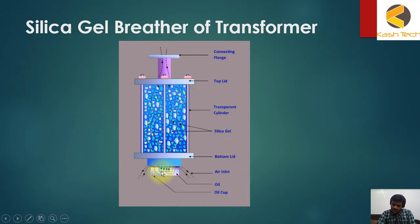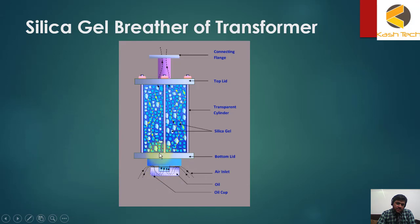You can see here there is a transparent cap, and inside it you will find oil. When air enters at the side of the breather, it passes through the oil which cleans the air from dust and other particles. From there the air goes upward and passes through the silica gel to the top of the transformer, also absorbing moisture along the way.